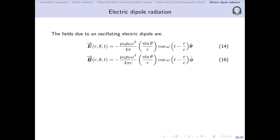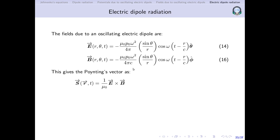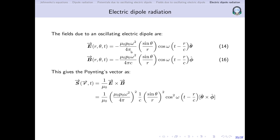With the electric and magnetic fields obtained, we compute the Poynting vector S = (1/μ₀) E × B. Comparing E and B, they differ only by a factor of 1/c in magnitude. Taking the cross product, the squared constants μ₀p₀ω² / (4π) appear from both fields, along with a factor of 1/c from B, sin²θ/r², and cos²(ωt − r/c). One μ₀ from the μ₀² cancels the 1/μ₀ outside.